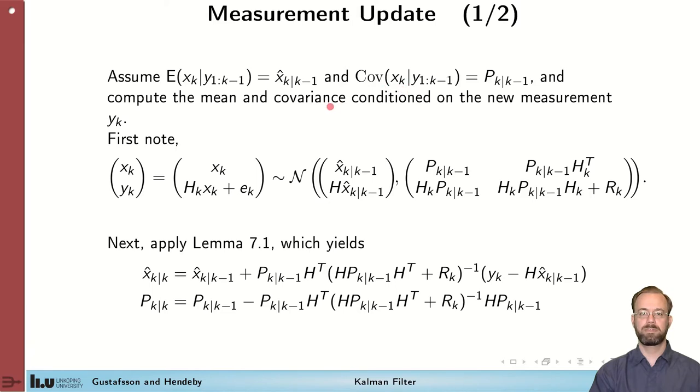We now compute the joint distribution of x k and y k, so the state at time k and the measurement at time k. We plug in the measurement model here, and then we compute all the relevant means and covariances. The mean of x is straightforward, we know it from before. And as with the prediction, the measurement noise is white, so that disappears. So we have H times x for the mean of that measurement.